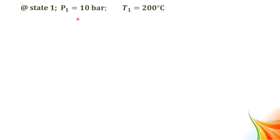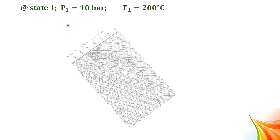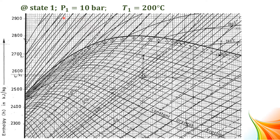At state 1, P1 = 10 bar and T1 = 200°C. To find the value of N, we need to know the quality of steam. From the Mollier diagram, we locate state 1 at the intersection of the 10 bar pressure line and the 200°C temperature line. Since point 1 is above the saturation curve, the quality of steam is superheated at the entry of the nozzle.